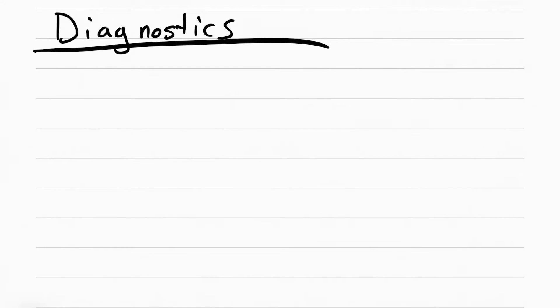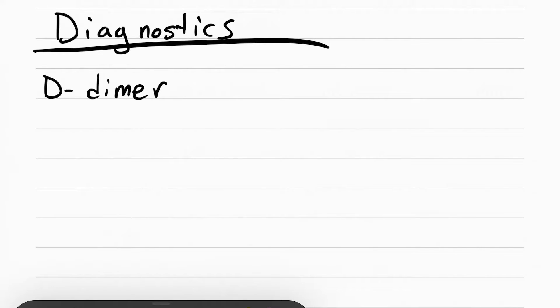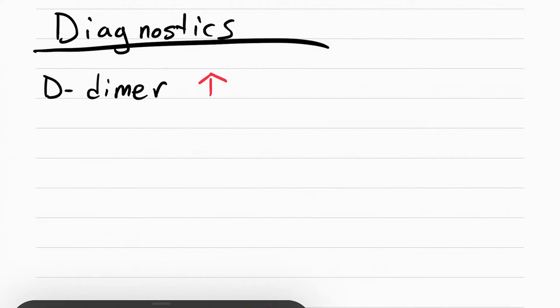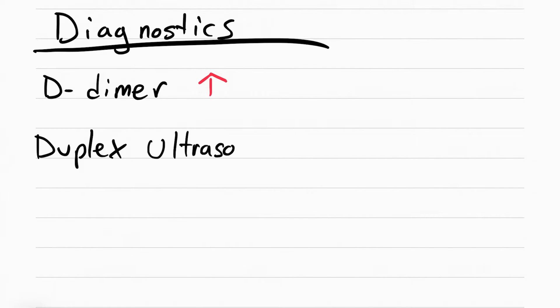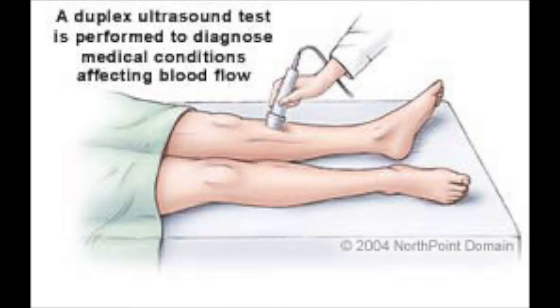The first thing you want to do after you see these symptoms is get a D-dimer via blood draw. The D-dimer is going to show that it's elevated, meaning there is a clot in the body — not necessarily the leg, just that there's a clot somewhere in the body. What's going to confirm the diagnosis of a DVT is a duplex ultrasound, which shows how the blood is moving through the veins and whether or not there is a clot there.